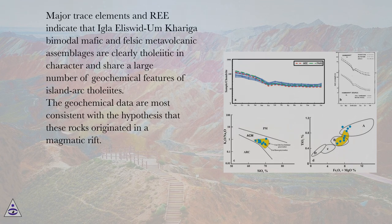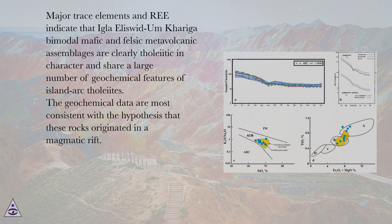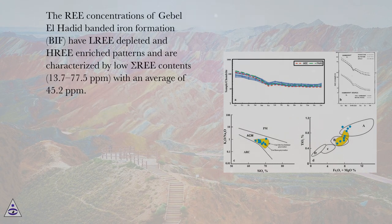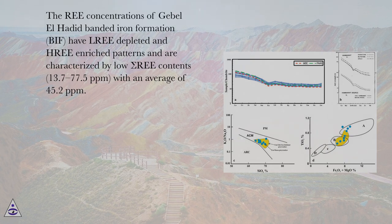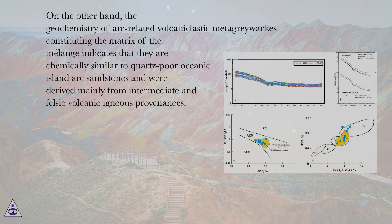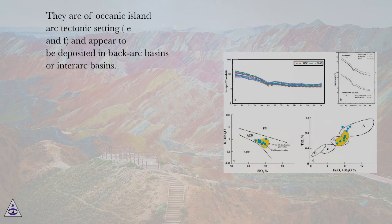Major trace elements and REE indicate that Igla-Elizid-Um-Kariga bimodal mafic and felsic metavolcanic assemblages are clearly tholeiitic in character and share a large number of geochemical features of island arc tholeiites. The geochemical data are most consistent with the hypothesis that these rocks originated in a magmatic rift. The REE concentrations of Gabal el-Hadid banded iron formation (BIF) have REE-depleted and REE-enriched patterns, characterized by low total REE contents of 13.7 to 77.5 ppm, with an average of 45.2 ppm. The geochemistry of arc-related volcanoclastic metagraywackes constituting the mélange matrix indicates they are chemically similar to quartz-poor oceanic island arc sandstones, derived mainly from intermediate and felsic volcanic igneous provenances, and are of oceanic island arc tectonic setting, deposited in back-arc or inter-arc basins.